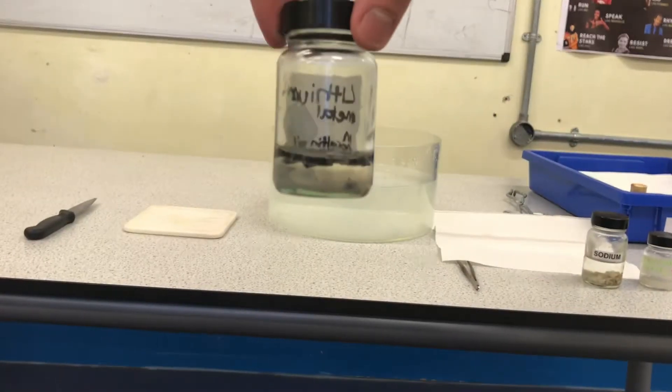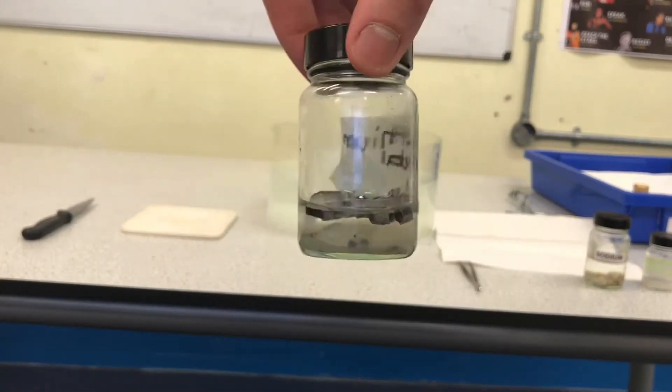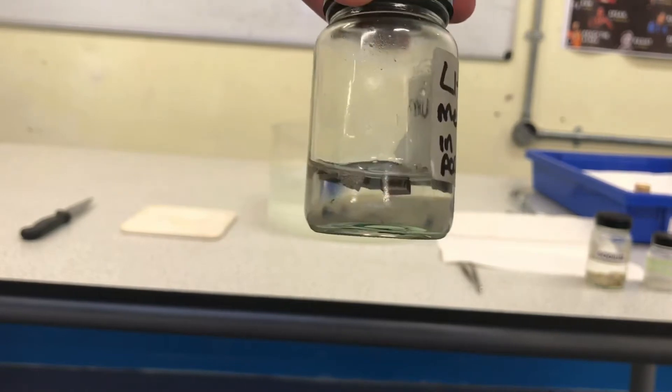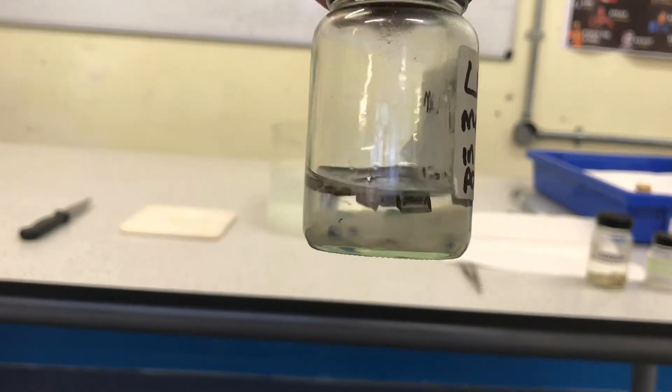The first alkali metal, lithium, you can see is stored in oil. This is to prevent it from reacting with oxygen from the air.